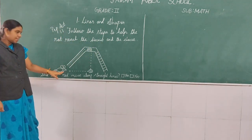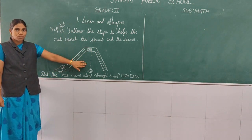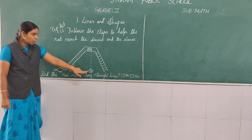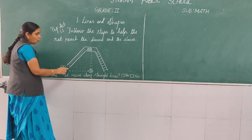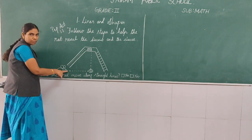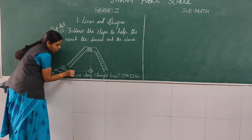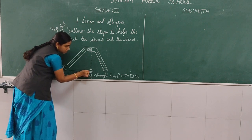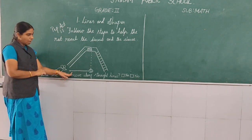Okay children, so the rat is going to reach the biscuit and cheese. See the picture in your book and take pencil. See here — now the rat is going to reach the biscuit. Trace along with me. Trace this line. Now the rat is moving to eat the biscuit. Everyone take pencil.